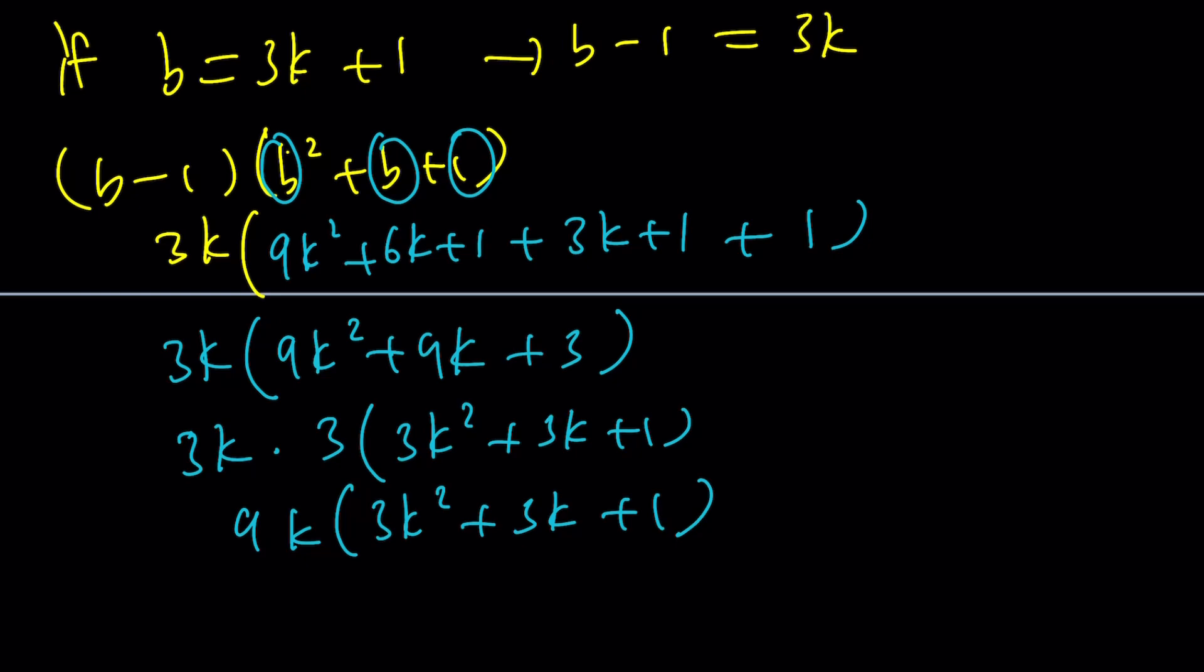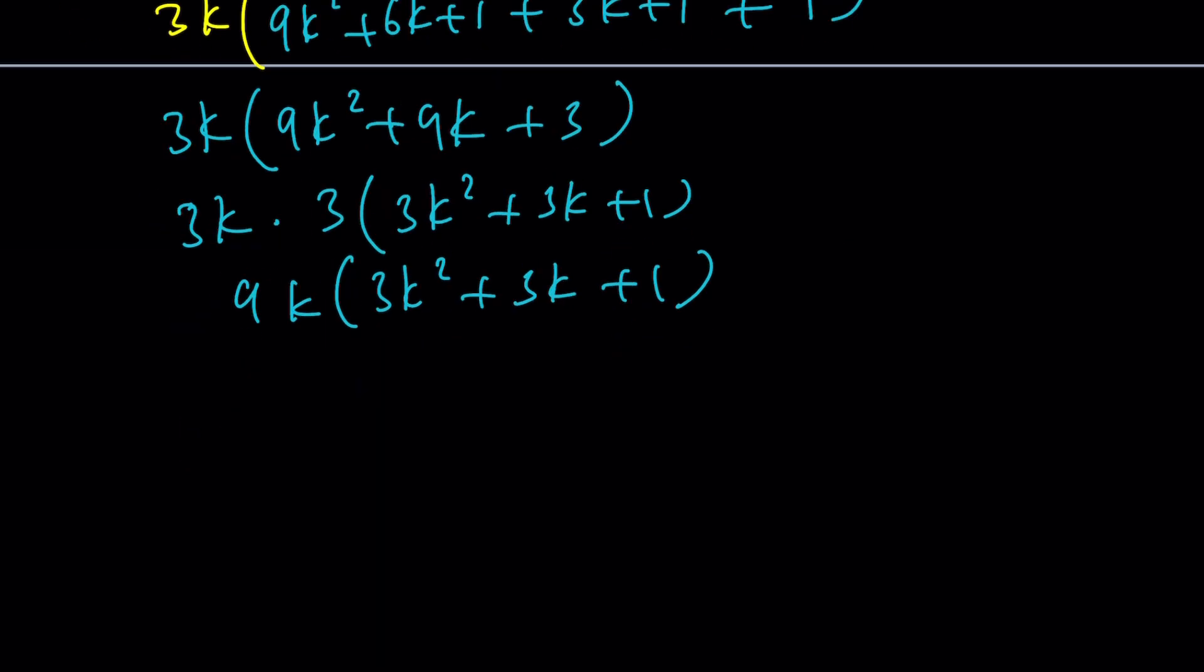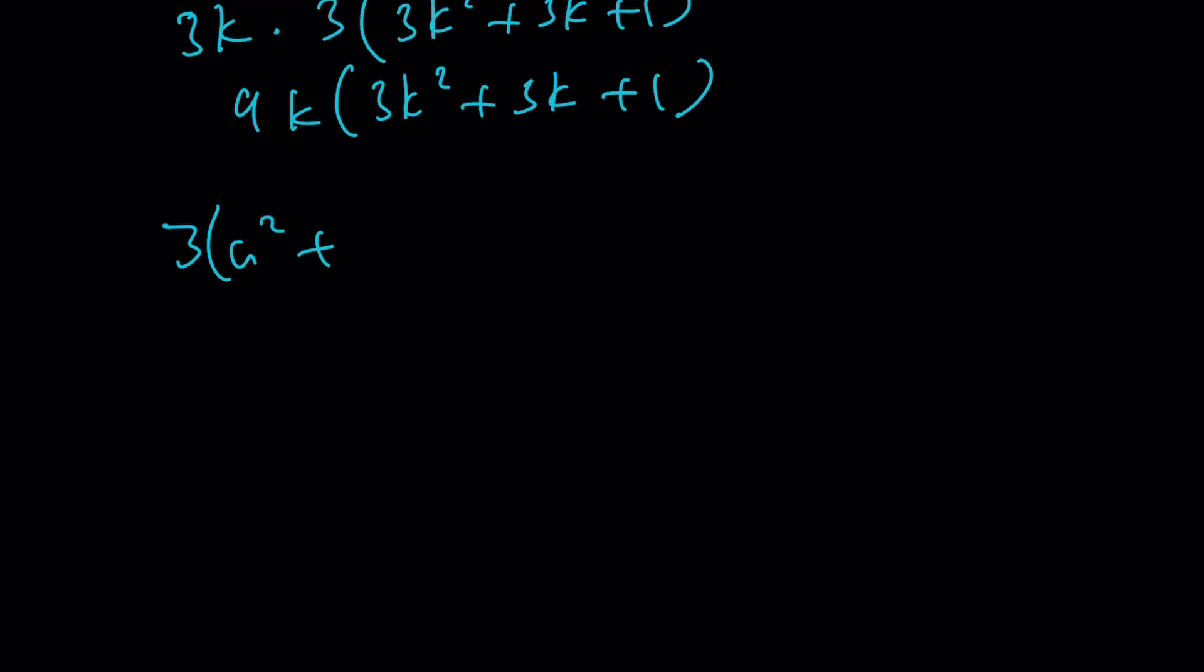So let's go ahead and take a look at it this way. We had 3(a² + a + 2) equals the right-hand side, and remember, that was (b - 1)(b² + b + 1) from b³ - 1. And we just found out that this can be written as 9k × something. Since this is also an integer, how about calling that n? So this is going to be 9kn.